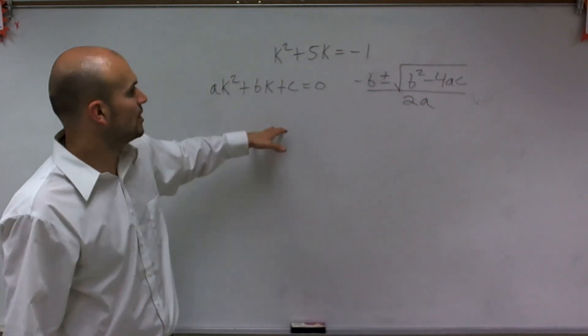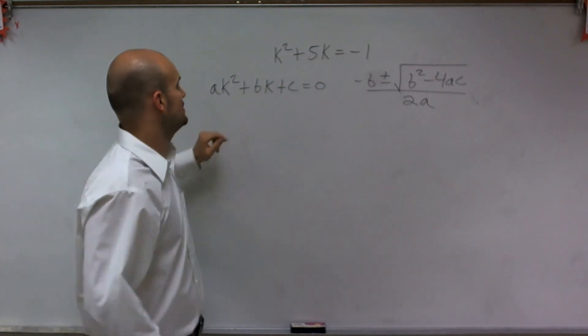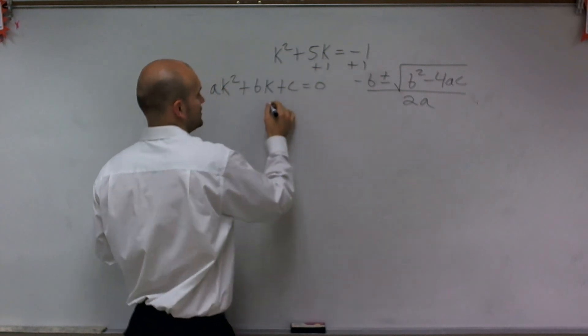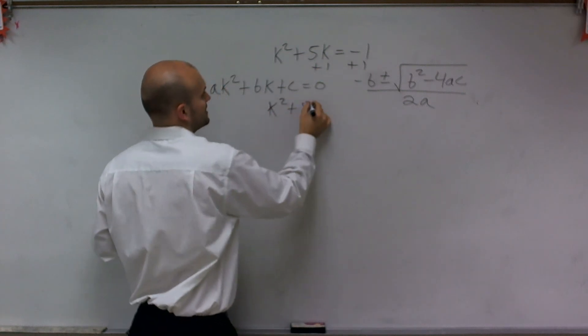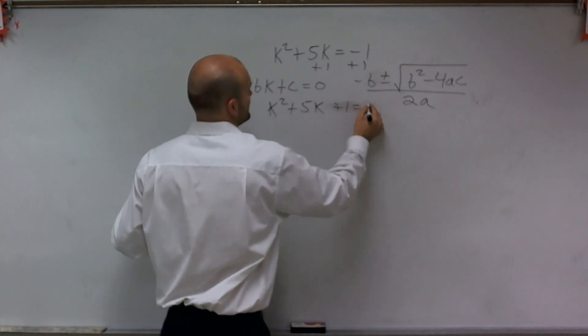So first of all, we need to make this equation look in this format. What I'm first going to do is add the 1 over to the other side. So I have k squared plus 5k plus 1 equals 0.